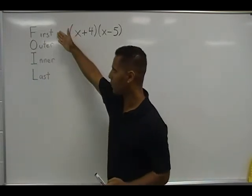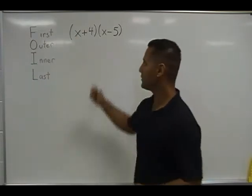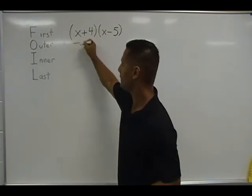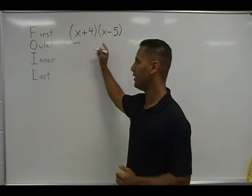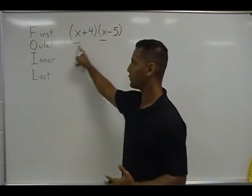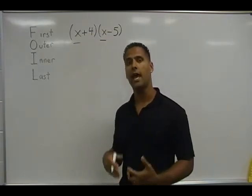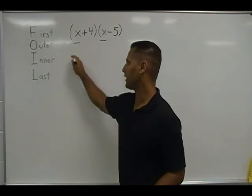And we are going to start, of course, with the F or the first terms. And the first terms are these terms right here. In this set of parentheses, this is our first term. And in this set of parentheses, this is also our first term. So we multiply those together first. x times x is x to the second power.